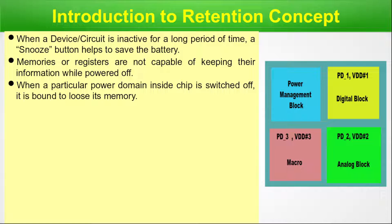Here is a diagram showing various power domains. You can see the power management block, power domain 1 with VDD1, power domain 2 with VDD2, and power domain 3 with VDD3 — three different power domains PD1, PD2, and PD3, all controlled by the power management block. Once the chip is in operation, say PD2 is not being used — the power management block will send an instruction to switch it off for its inactive period, and in this situation it is going to lose its memory. This is a challenging situation, and we are coming to how we tackle it.